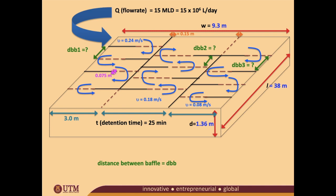We are referring to Example 2, where we already calculated the width as 9.3 meters — that won't change. The length is 38 meters and the depth is 1.36 meters, also unchanged. Now we need to find the number of baffles, the number of channels, and the distance between baffles.